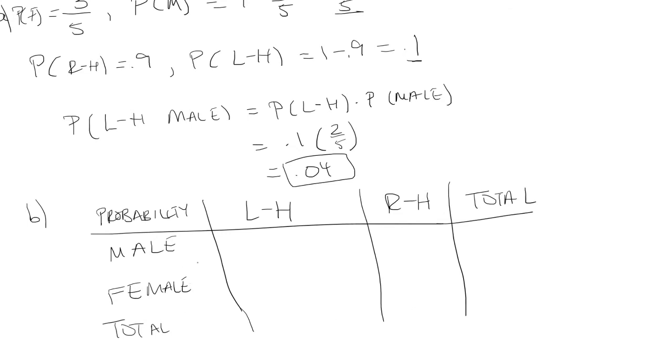So for males, we just found what it was. There's a 10% chance a person is left-handed and two-fifths chance the person is male. So that was 0.04.